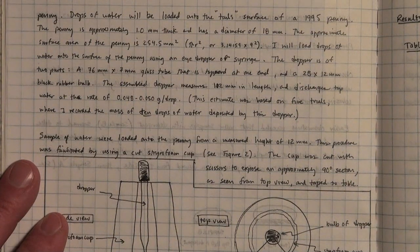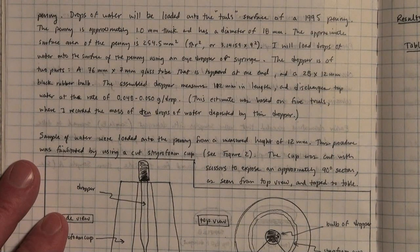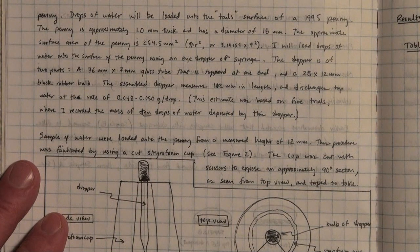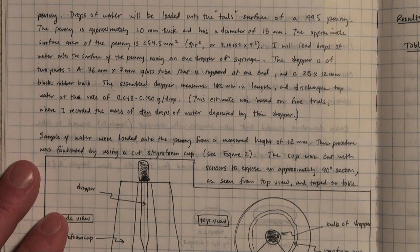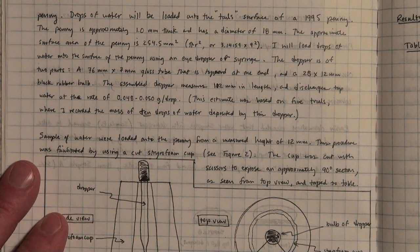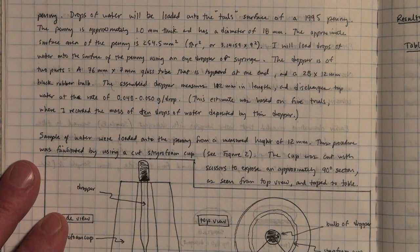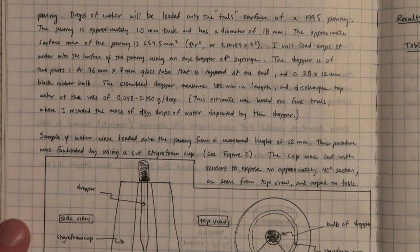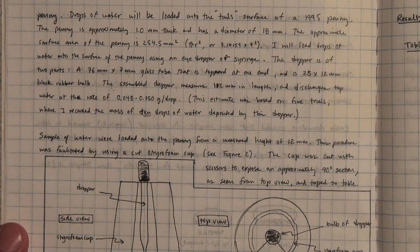I will load drops of water onto the surface of the penny using an eyedropper or a syringe. Note that the assembled dropper measures about 102 millimeters in length and discharges water at the rate of about 0.05 grams per drop.